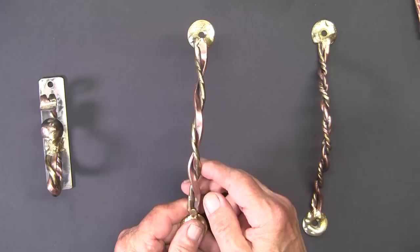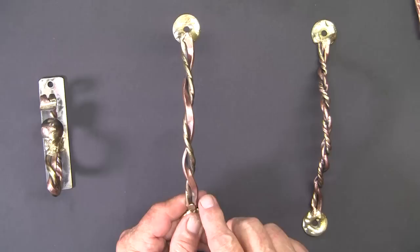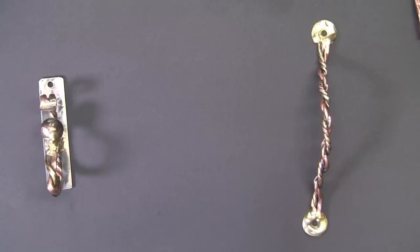And this 3/16ths inch brass wire was annealed and then twisted. The brass wire has a lot more twists than the copper. So this sets up a number of possibilities.